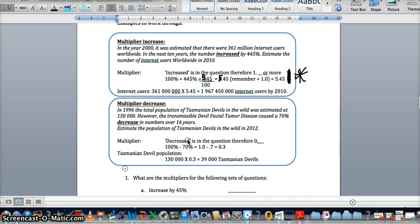This one in 1996, the population of Tassie Devils are estimated at 130,000. However, the tumour disease caused a 70% decrease. Your thinking is that there's a decrease in the question, therefore your multiplier is not 1.0 and up, it's 0.999999 and down. Somewhere from there down.